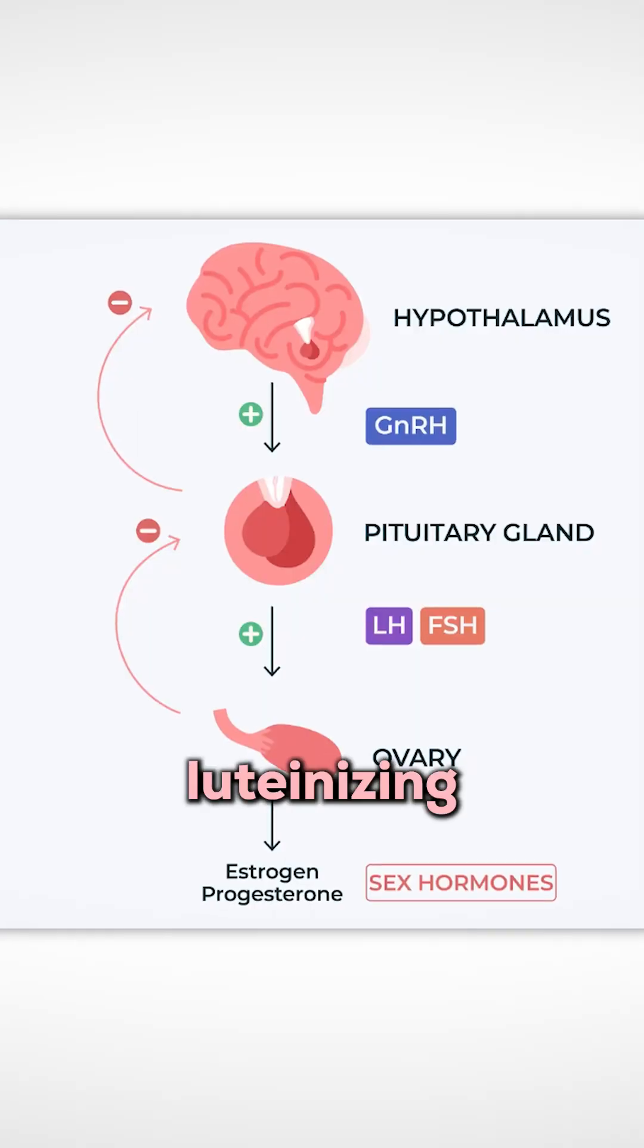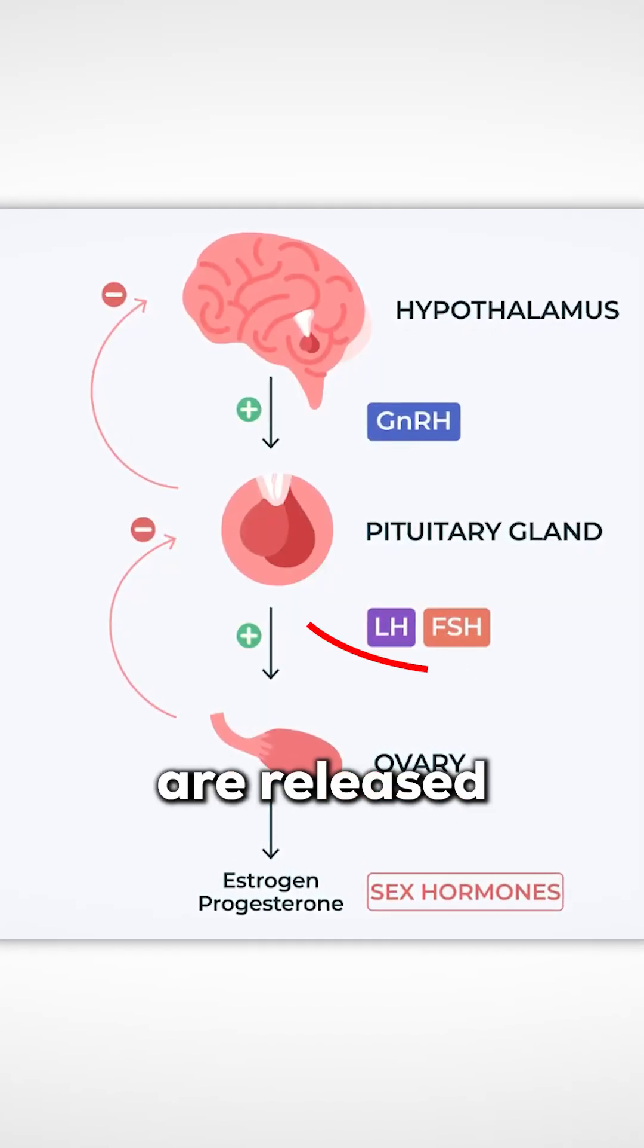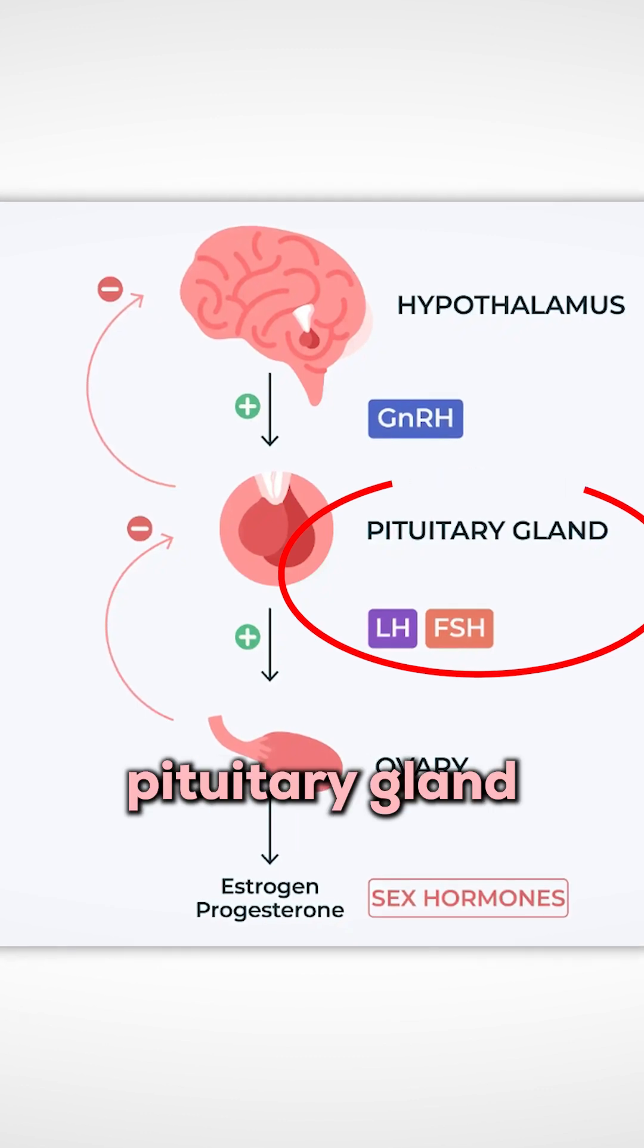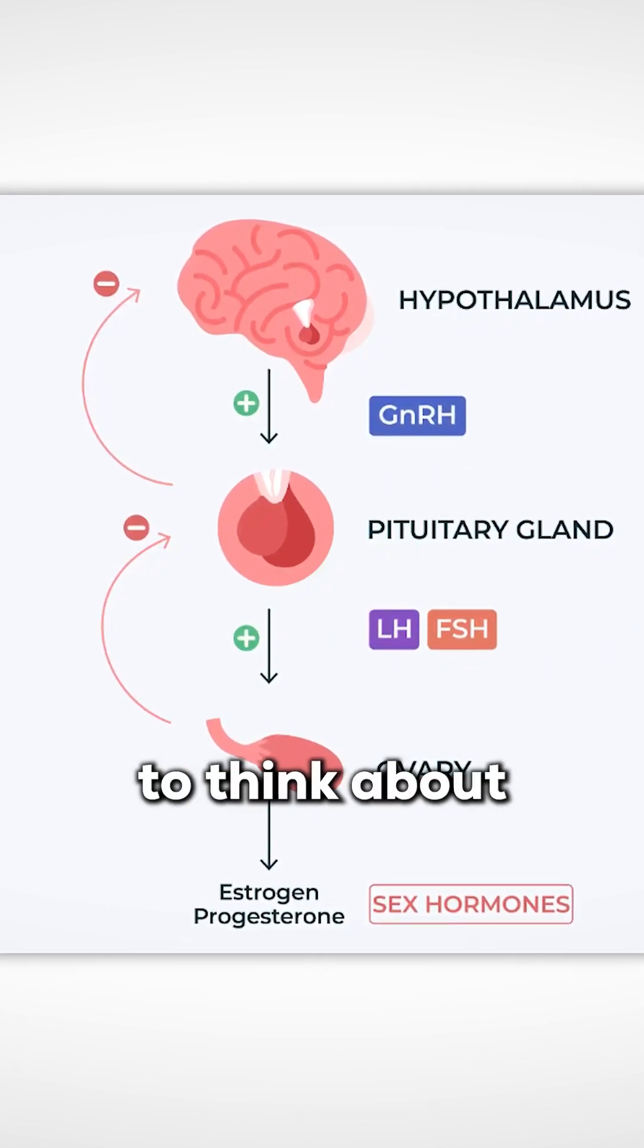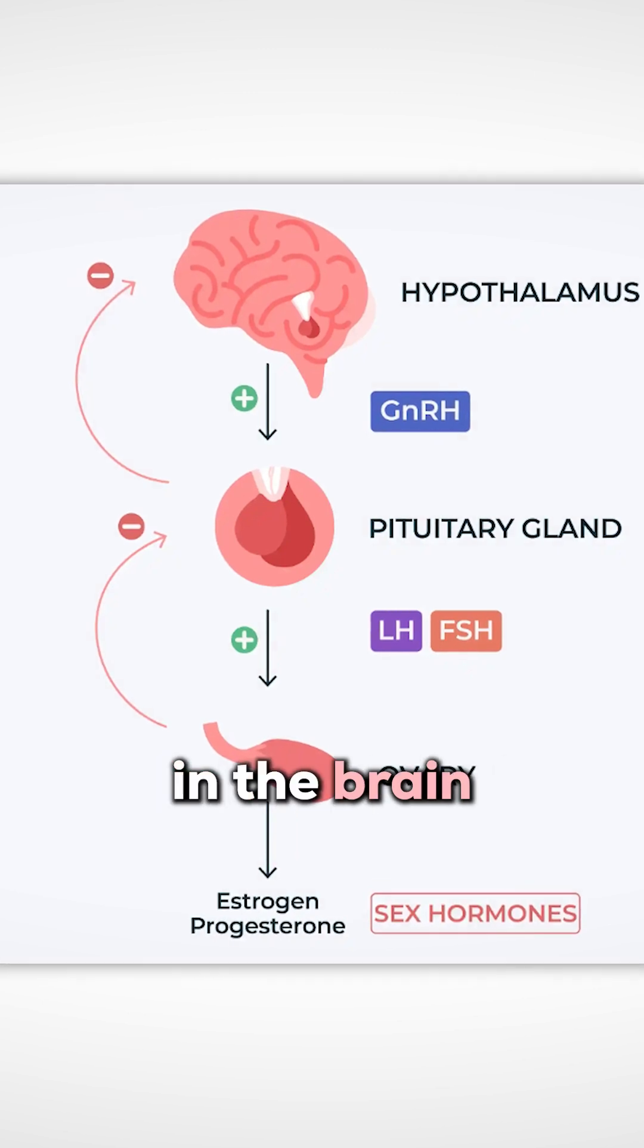Now, both luteinizing hormone and follicle-stimulating hormone are released from the pituitary gland all the way up in the brain, so this is really cool to think about. They get secreted from the pituitary gland in the brain,